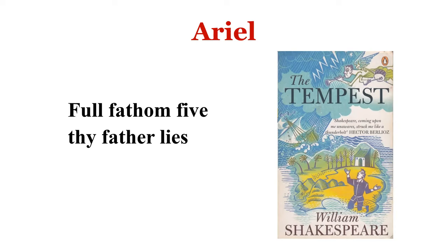'Full fathom five' means thirty feet. 'Thy father' refers to Ferdinand — Prospero brings up a storm and an illusion, and Ferdinand, prince of Naples, believes his father Alonso is dead at the bottom of the sea. That is what the line refers to. Ariel is addressing Ferdinand, but the father is not actually dead — it is a romance play, so all is well that ends well.